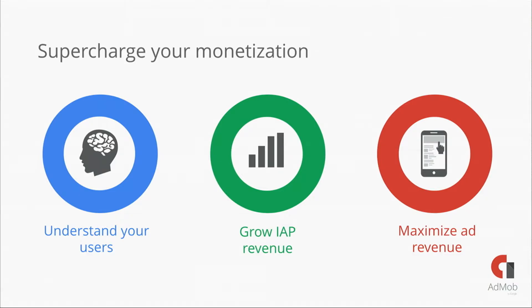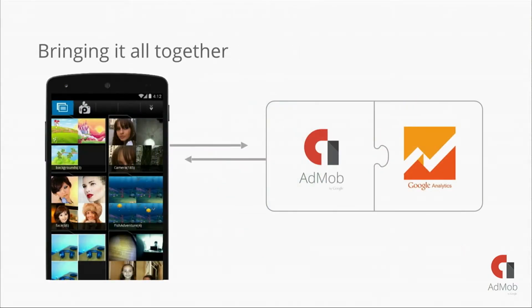Let's start with analytics. Last year, we merged Google Analytics and AdMob in the same interface. Setting Google Analytics up is soon going to be a piece of cake — you will implement the Google Mobile Ads SDK, check a box, and start sending data to GA.